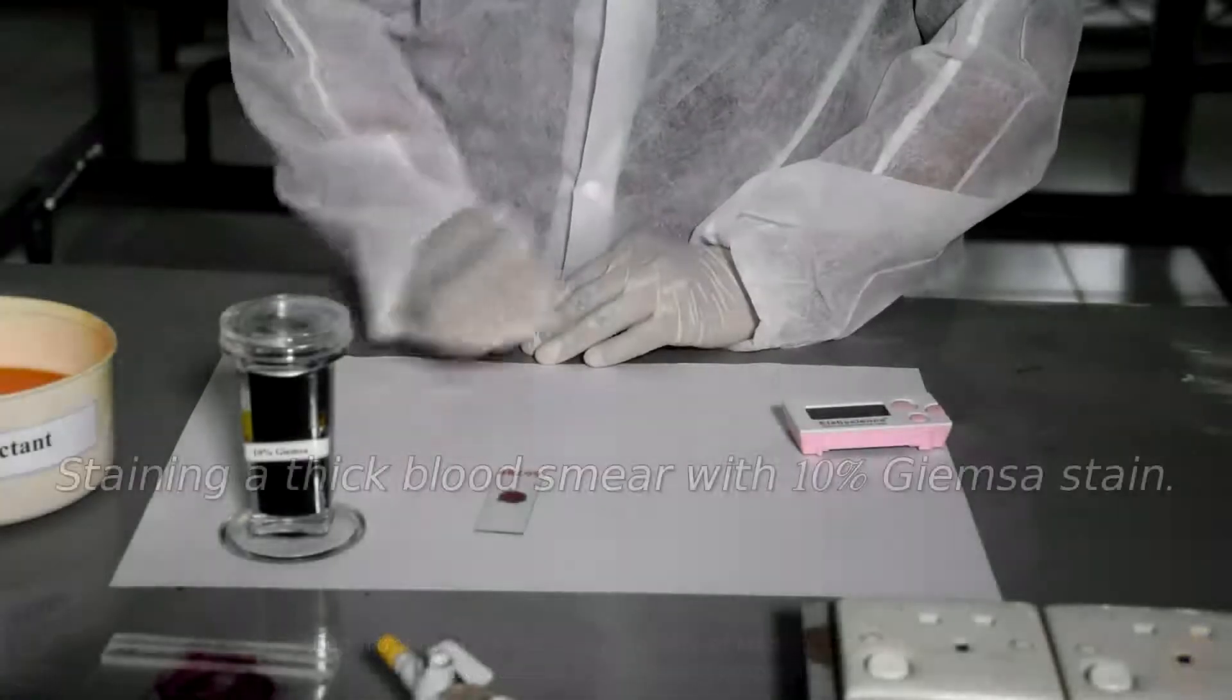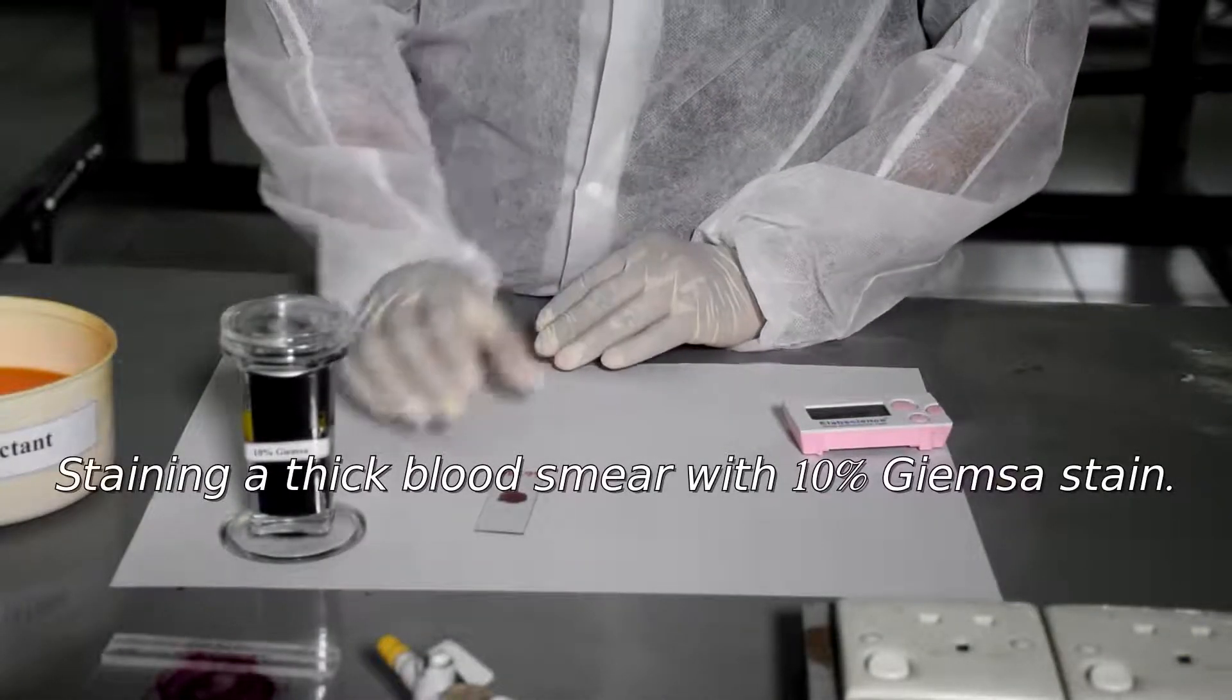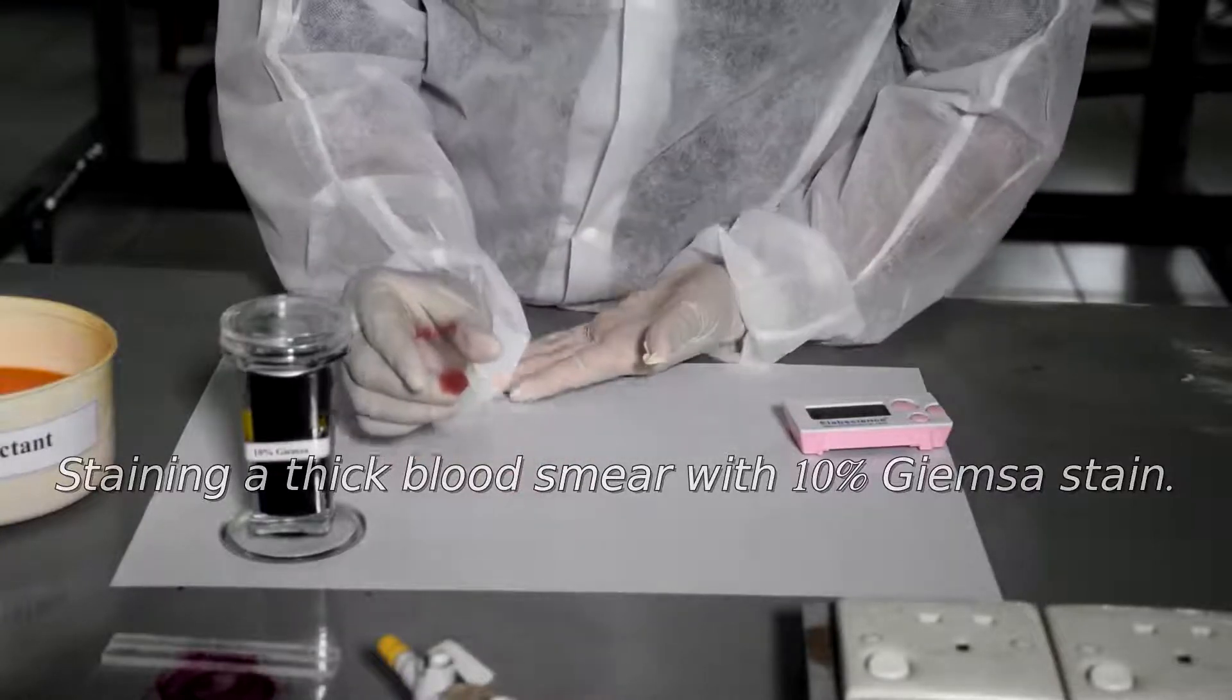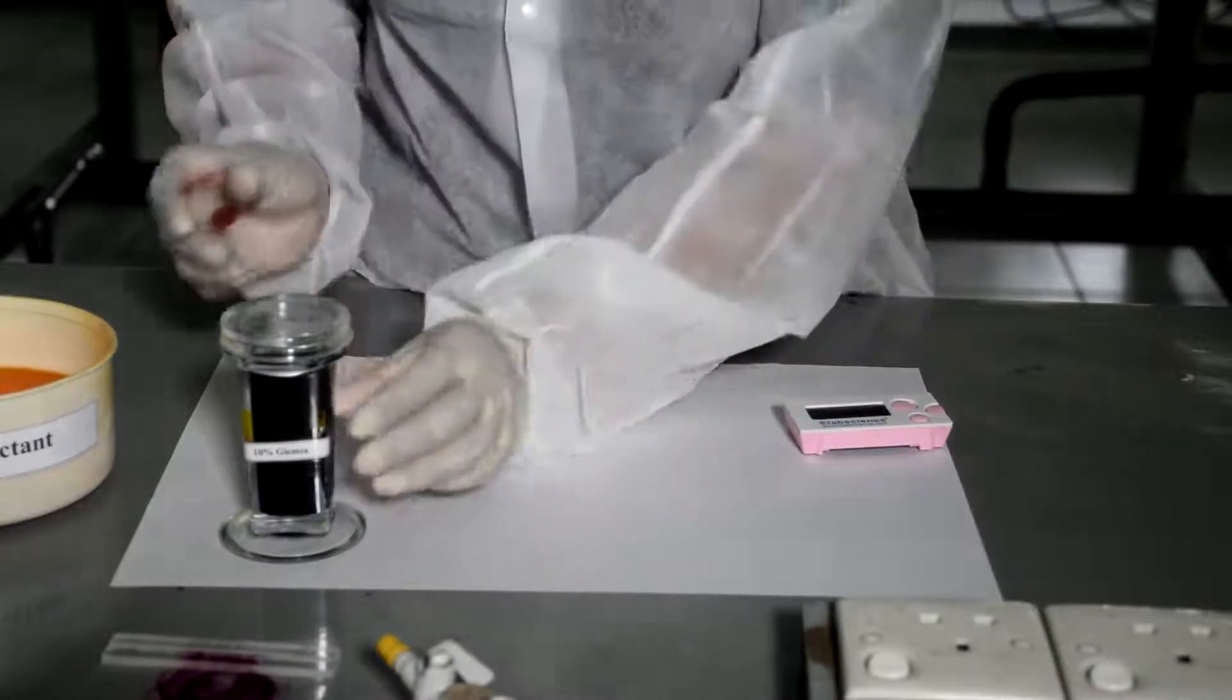Now we are going to stain the thick smear that we prepared earlier. This is a pre-prepared thick blood film. Here we have 10% Giemsa for staining.